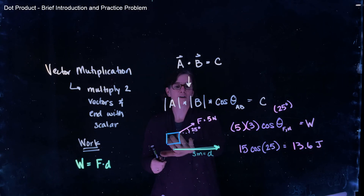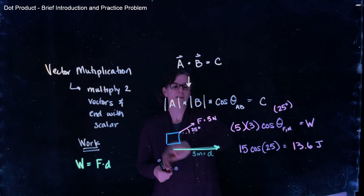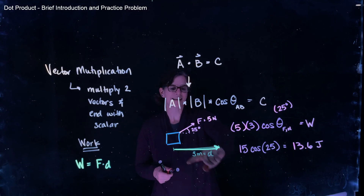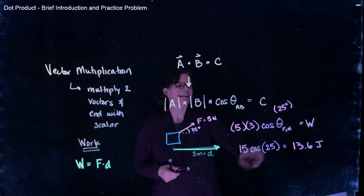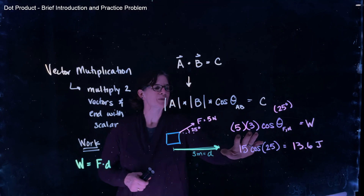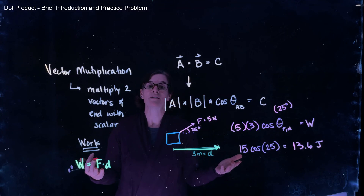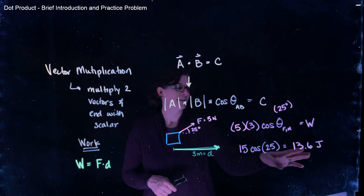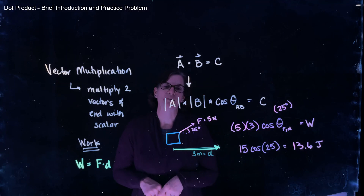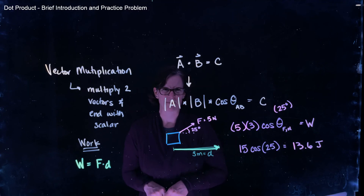The work done on this box by that force is the dot product between the force and the displacement, represented by looking at the magnitudes times the cosine of the angle between those two vectors to get the scalar quantity. That's a brief introduction to the dot product.